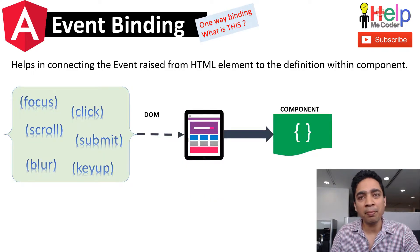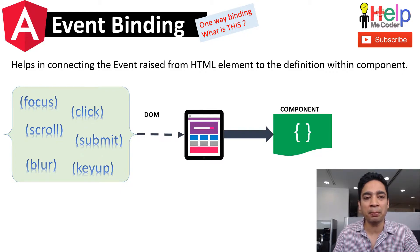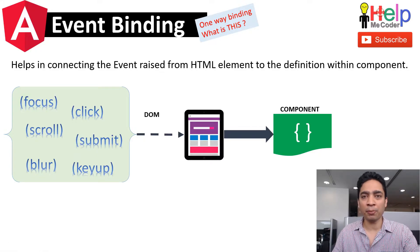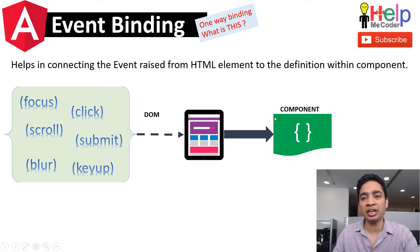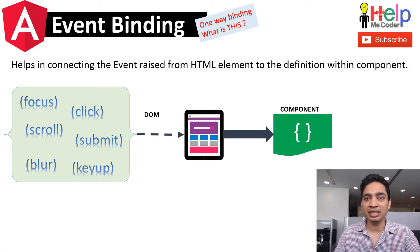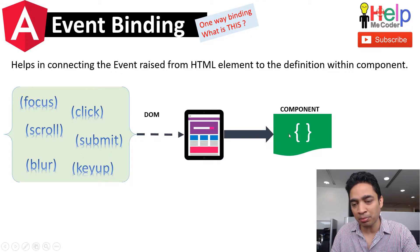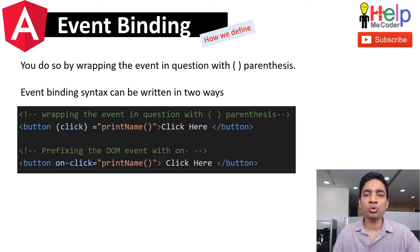As we know, in a web page all interaction or actions happen using the events that we define on that page — like mouse over, mouse up, submit, focus, click, and so on. If you want to perform some operations based on these events, you need to call some method defined in the code behind, which in our Angular case is the component. So event binding in Angular helps you to connect the event raised from the HTML element to the definition defined within the component.